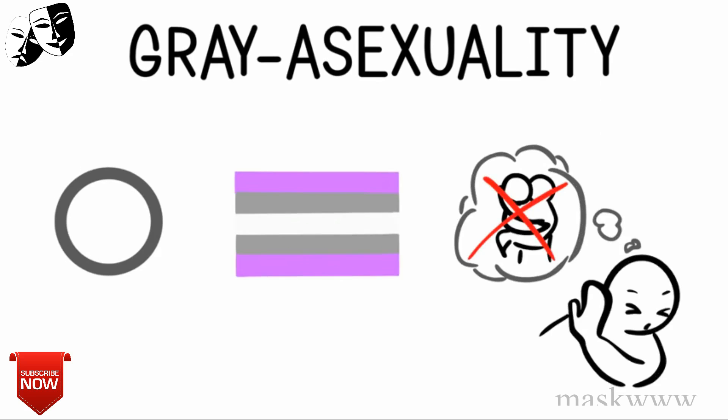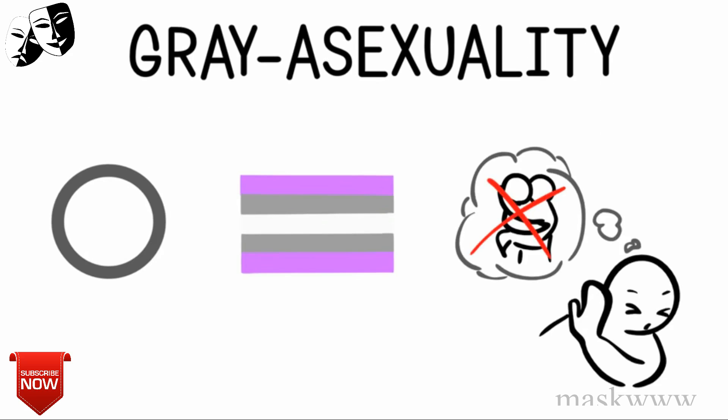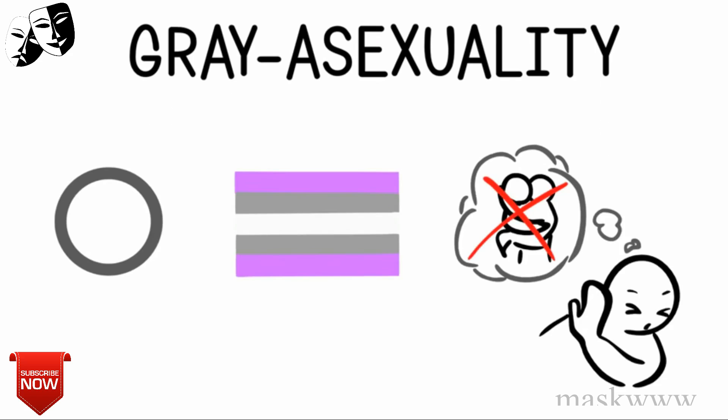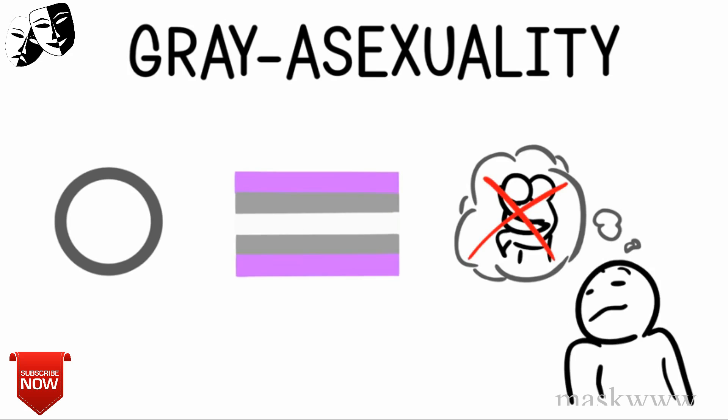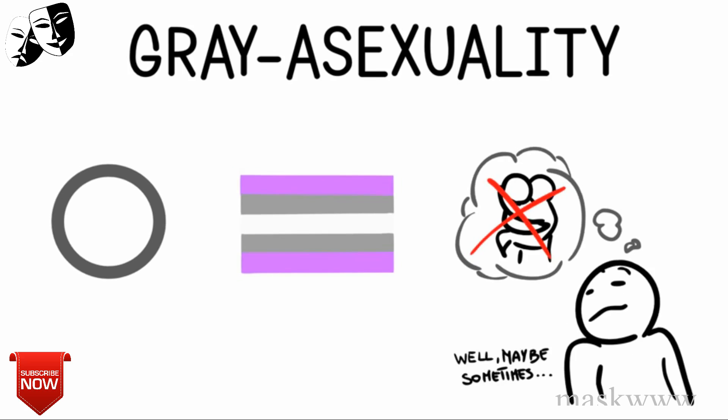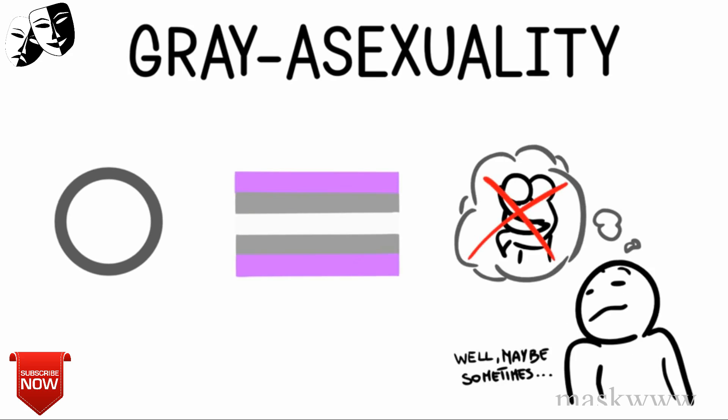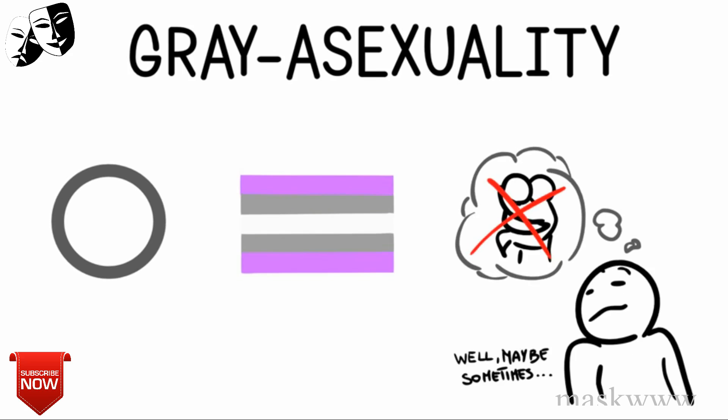7. Gray Asexuality. This is similar to the previous sexuality. However, instead of never experiencing sexual attraction, someone who is graysexual may very rarely experience sexual attraction. They are still valid under the asexuality umbrella, despite occasionally experiencing sexual attraction.